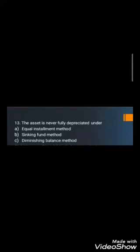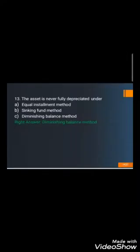Question number thirteen: The asset is never fully depreciated under — A) Equal installments method (straight line), B) Sinking fund method, or C) Diminishing/reducing/declining balance method. The correct answer is C) Diminishing balance method. Under this method, salvage value is not deducted from cost at the start. Therefore, when the end of useful life is reached, a residual amount — the salvage value — remains, and the asset is not fully depreciated.